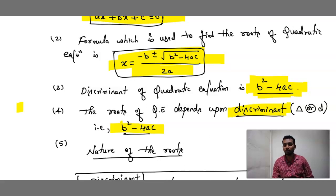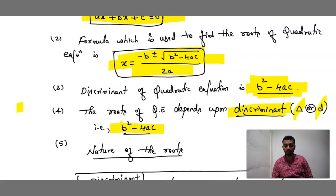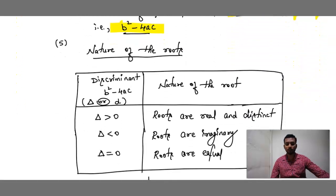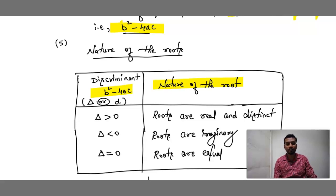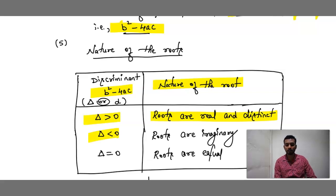Some people denote the discriminant by the triangle symbol, but it is not called triangle — it is called delta (D-E-L-T-A). It is also denoted by the symbol D. Now we classify the nature of the roots into three categories: if delta is greater than 0, the roots are real and distinct; if delta is less than 0, the roots are imaginary; if delta is equal to 0, the roots are real and equal.